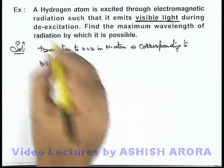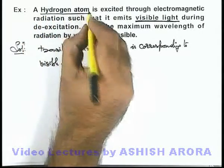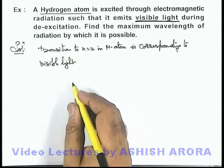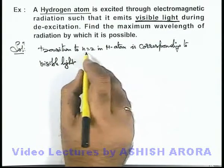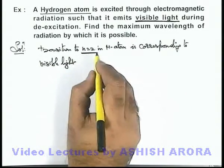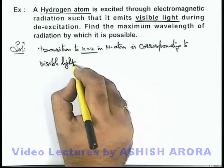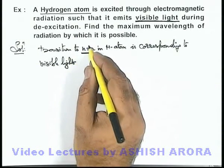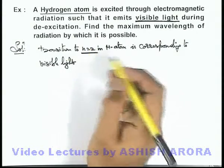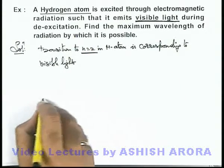And initially if we are given with hydrogen atom it must be n equal to 1. So any transition from higher orbit to n equal to 2, minimum energy must be required for exciting the hydrogen at least from 1 to 3, so that electron will make a transition from 3 to 2 and it will emit visible light.